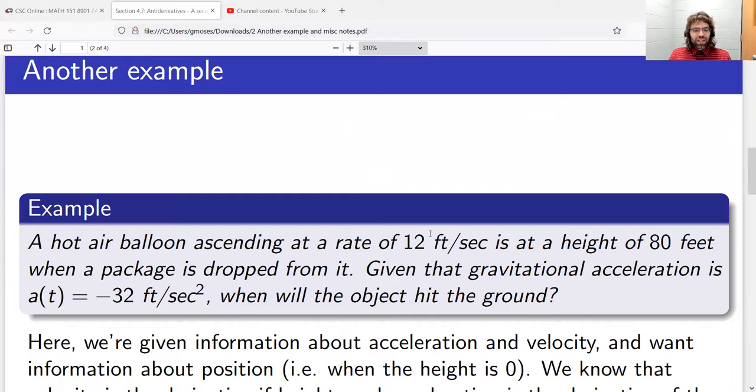And when it's 80 feet above the ground, a package is dropped from it. Given that gravitational acceleration is negative 32 feet per second squared, and neglecting air resistance, when will the object hit the ground?